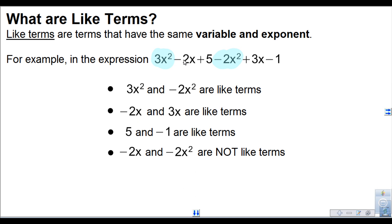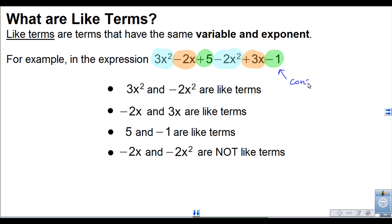Negative 2x and 3x are also like terms because they both have x and both x's have an exponent of 1. And then the 5 and the negative 1 are also like terms — they don't have a variable, so these are called constant terms.